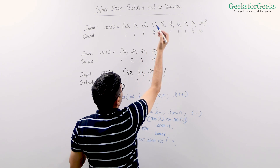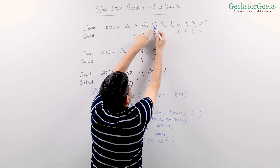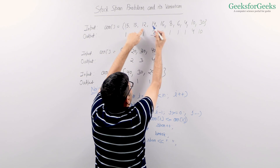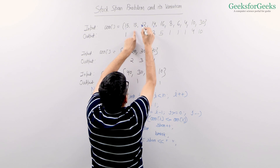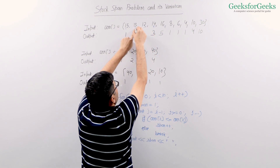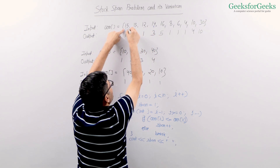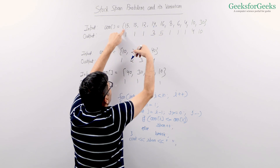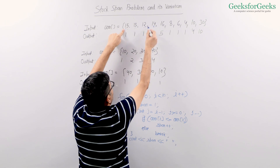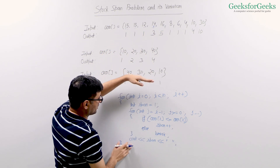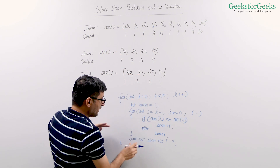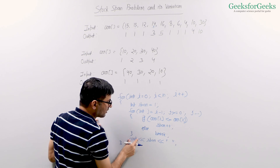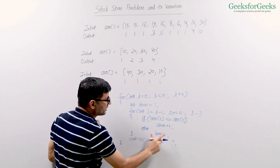Let's see with the example of 14. I initialize the span as 1 because 14 itself is part of the span. Then I go to the left: 12 is smaller, so I make span equal to 2; 13 is smaller, so I make span equal to 3. When I come to 15, I see that 15 is greater than 14. So I break the loop and print the span value as 3. I have used C++ style code. If you are programming in Java, then you will write system.out.println here to print the span.